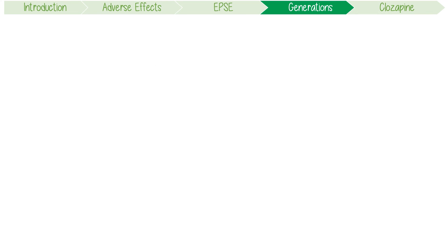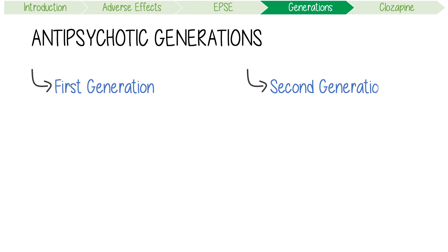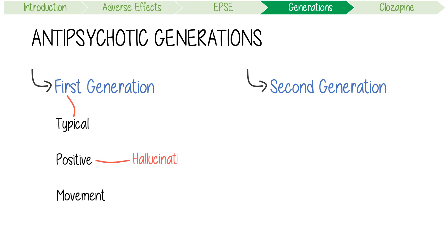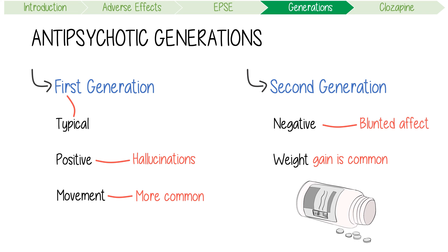Let's think about the differences between antipsychotic generations. Coming first in a race is typically positive and winning is about movement — this tells us that first generation drugs, also known as typical antipsychotics, provide good relief of the positive symptoms of schizophrenia like hallucinations, and that movement disorders are more common in this class. Coming second is only good if you're a negative person, and losing just makes you eat too much and gain weight — reminding us that second generation drugs are really good for patients with serious negative symptoms like blunted affect, and that weight gain is common in most second generation drugs.